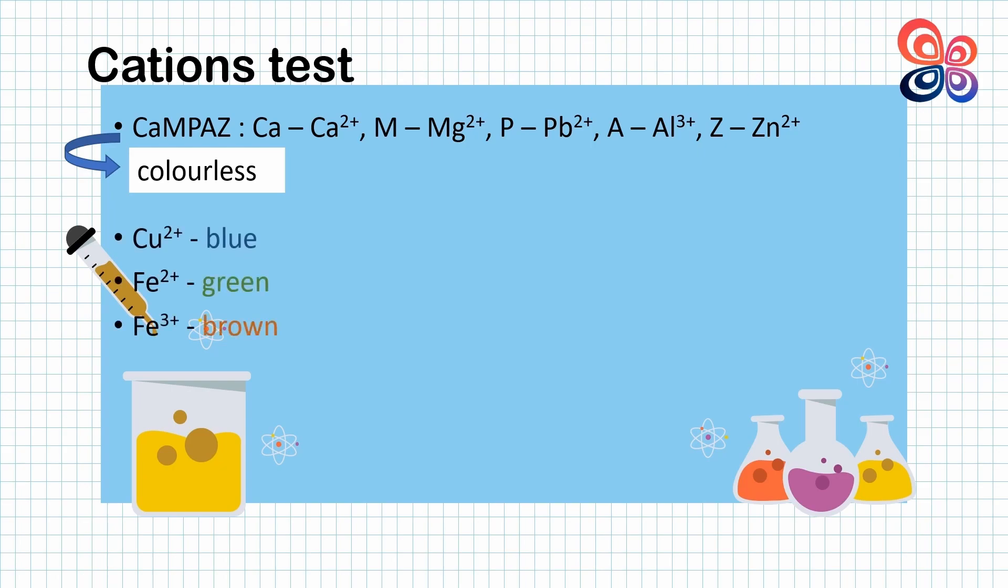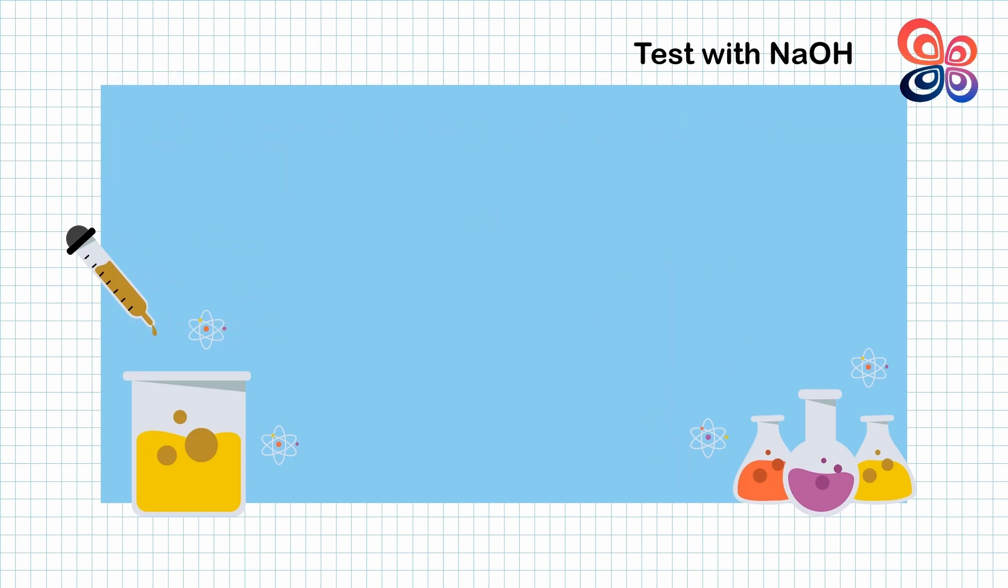To remember these colors for these metal ions, just imagine the cloud or sky and a tree. The color of cloud represents copper, the color of leaves for iron 2 ion, and the color of stem for iron 3 ion. These metal ions are tested with sodium hydroxide and ammonium hydroxide.